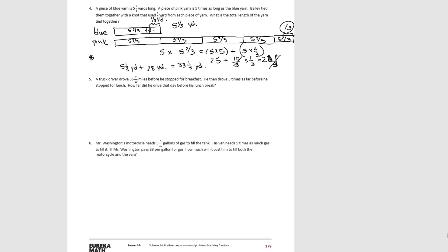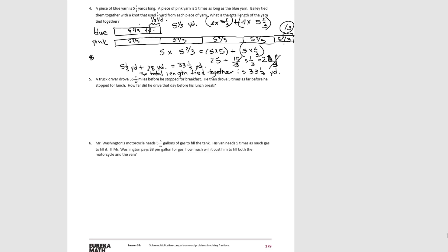So to write our answer in a complete sentence: the total length tied together is 33 and one-third yards. Now again, there was more than one way to solve this problem. You could have seen that we had two pieces that were five and one-third — the blue piece and the last piece of the pink — so you could have done two times five and one-third, and then seen that we had four pieces that were five and two-thirds. You could have solved it that way and added them together. That's another strategy that would give you the same answer of 33 and one-third yards.